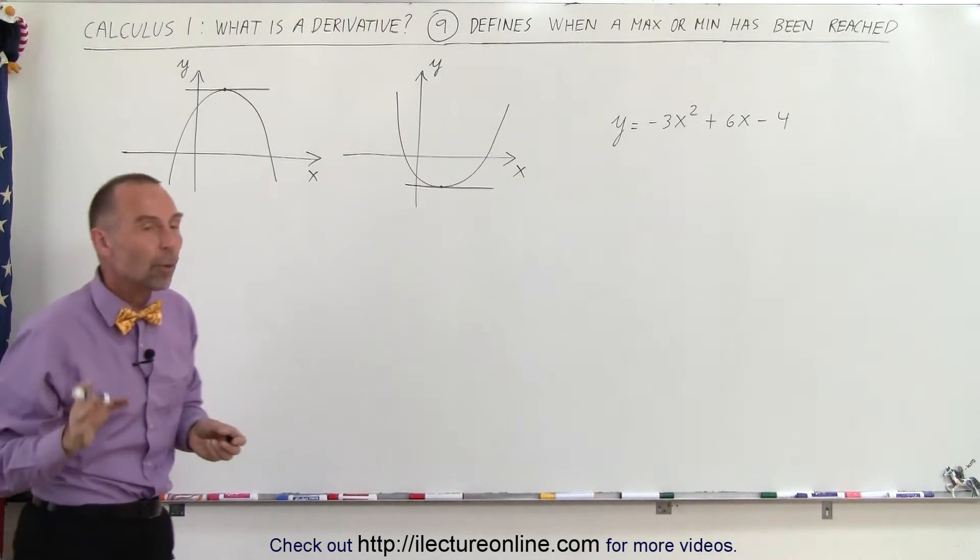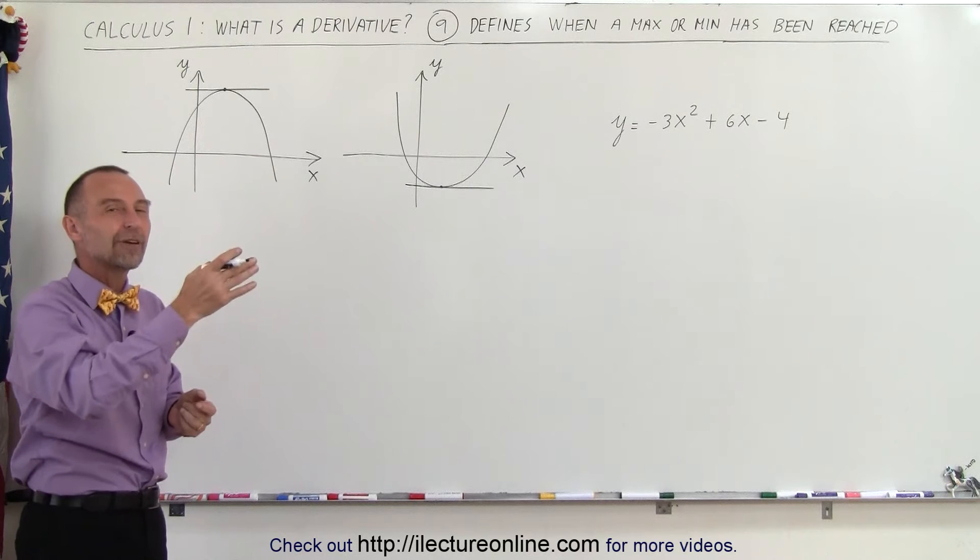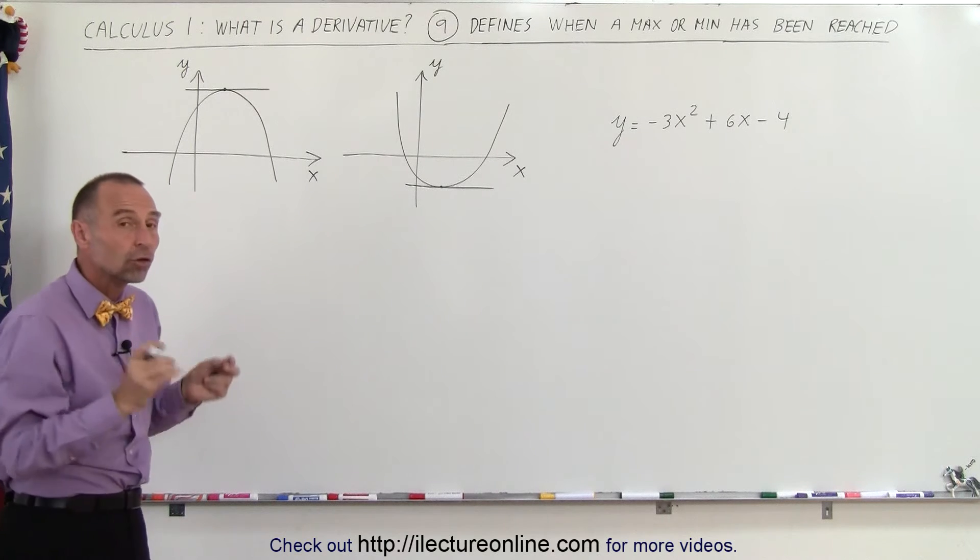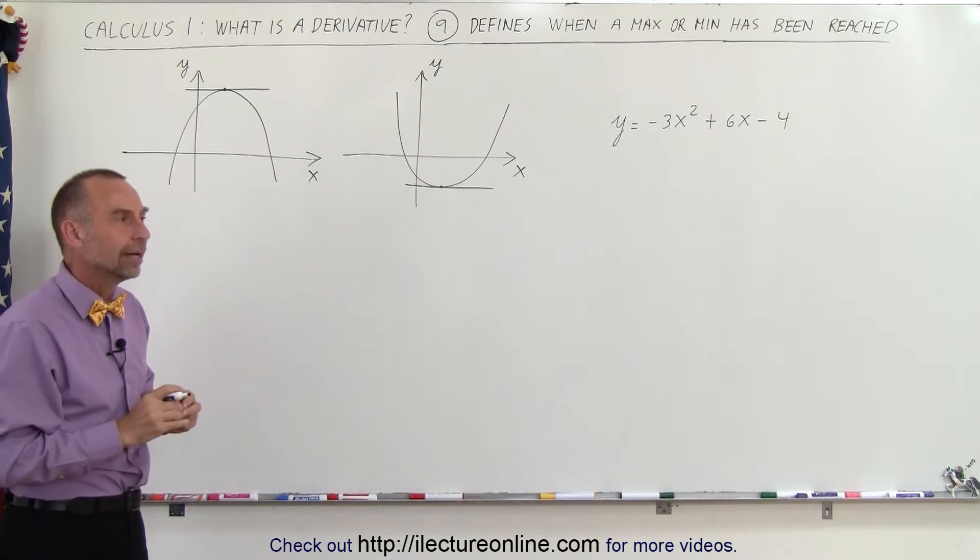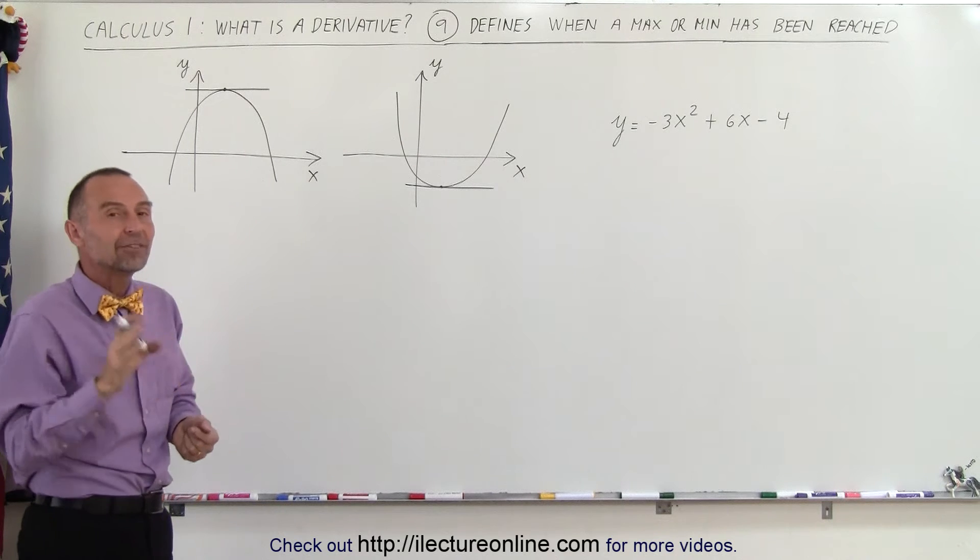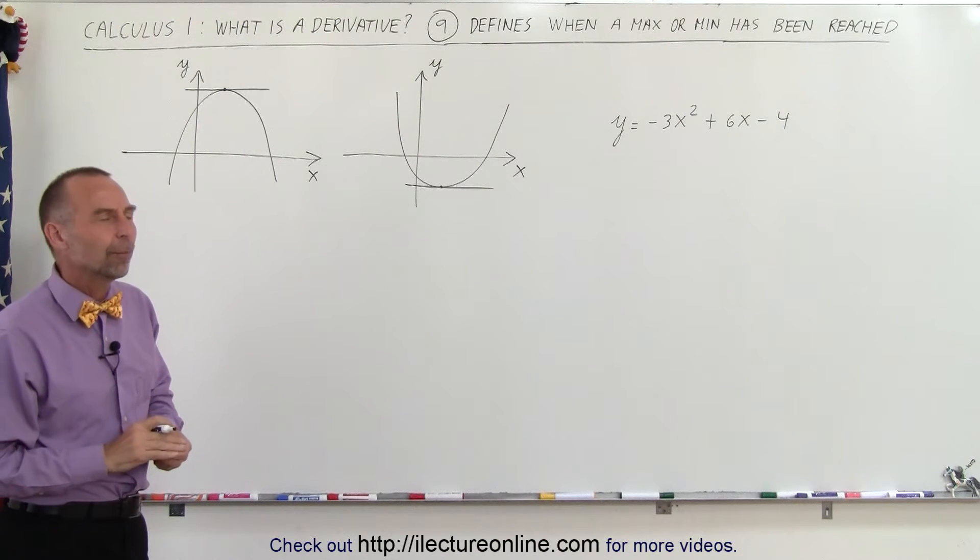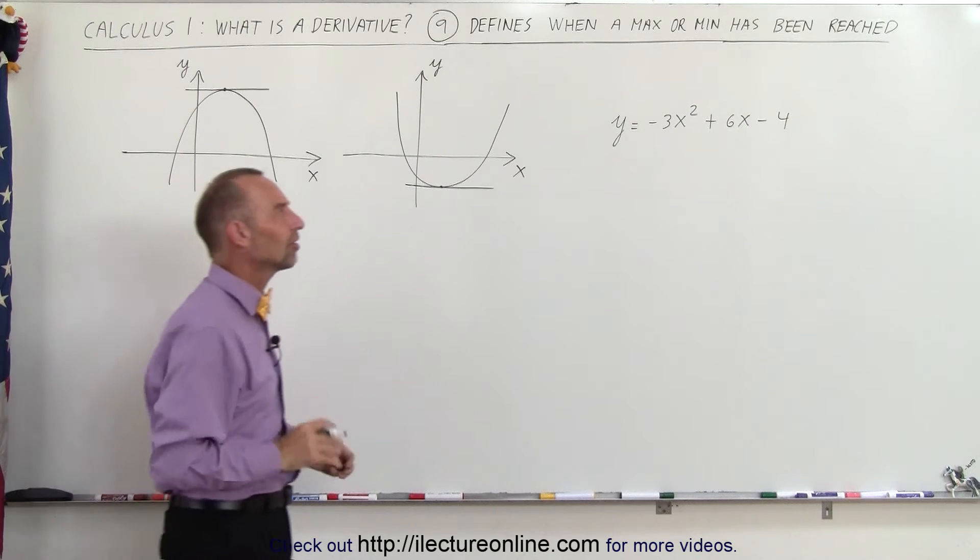So therefore you know that at the points where the function reaches a maximum value or a minimum value, the slope must be equal to zero. And since the slope is equal to the derivative, that means the derivative there must equal zero. So let's go ahead and use this example.